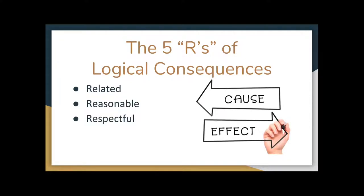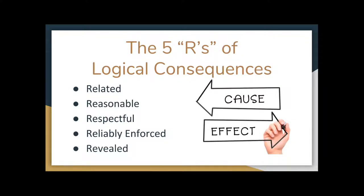Third, consequences must be respectful — a student is still a human being, and we're there to preserve their self-esteem while stressing what is good versus bad behavior. Fourth, consequences must be reliably enforced: if you threaten students repeatedly but never follow through, it's ineffective — you must be consistent or students won't take you seriously. Fifth, consequences must be revealed — known in advance for predictable misbehaviors. For unexpected misbehavior, you must establish a logical consequence and communicate it, so students know going forward.